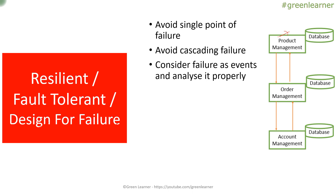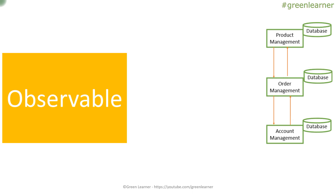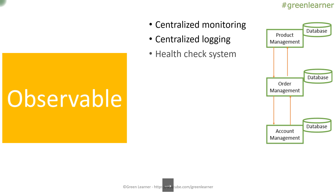The next principle is observability. In monolithic architecture, everything was on one instance and it was easy to monitor health status. Now you have separated each module as a service, so you must keep track of each service — monitor them, keep logs for each, and track the health of each service, because a failure at one point can affect the entire application. This is possible through centralized monitoring, centralized logging, and a proper health check system so that, for example, Order Management knows whether Product Management is available.